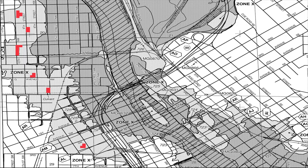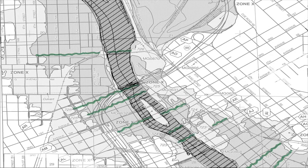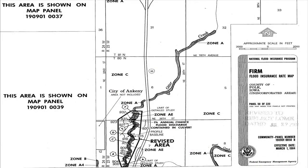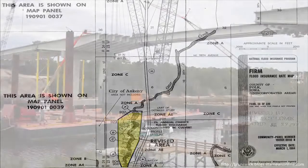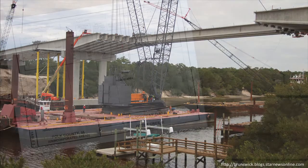Because the revisions associated with a LOMR will often result in changes to the mapped floodplains, floodways, and base flood elevations, FEMA includes an annotated map that documents those changes to those portions of the community's effective FIRM. The types of floodplain development projects that would require a LOMR are often costly and, once completed, difficult to modify if FEMA fails to approve the request for LOMR.